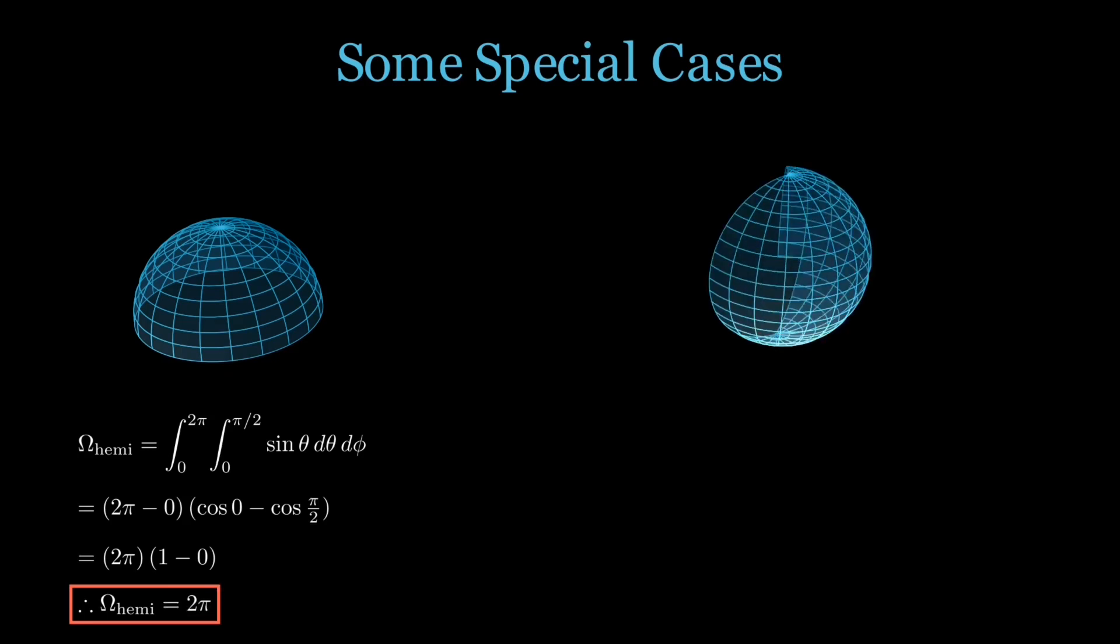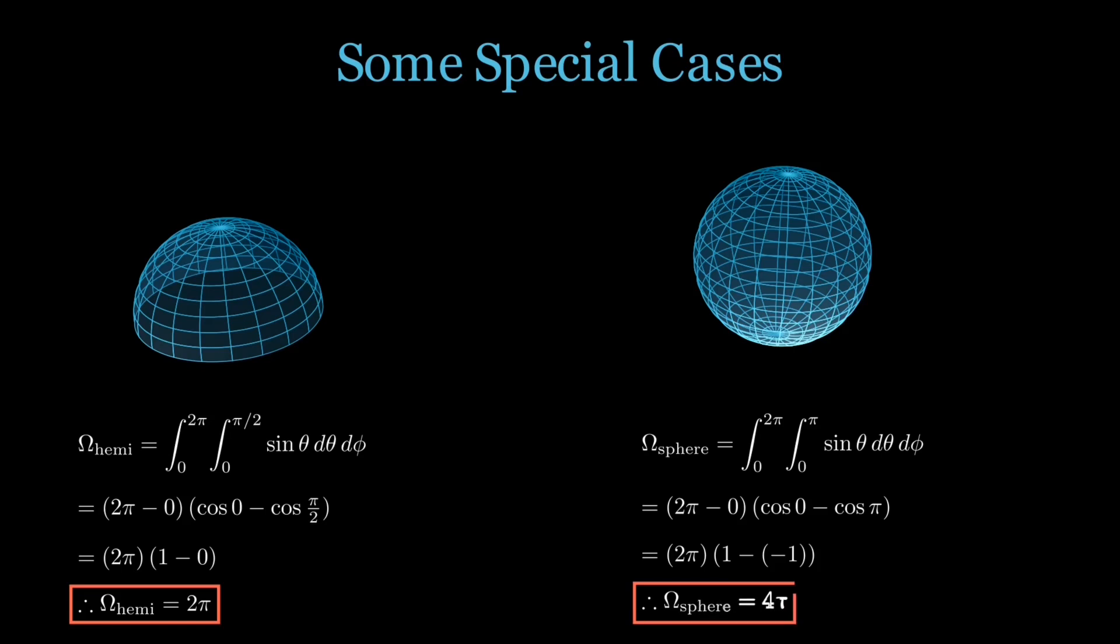Secondly, let's consider a sphere and evaluate its solid angle again from the center. The integration here goes from theta equals 0 to pi and phi equals 0 to 2 pi. We simplify the inner integral cos 0 minus cos pi and that becomes 1 minus negative 1 or simply put 2. So we get 2 pi times 2 or 4 pi steridians. This is the total solid angle around any point in space.